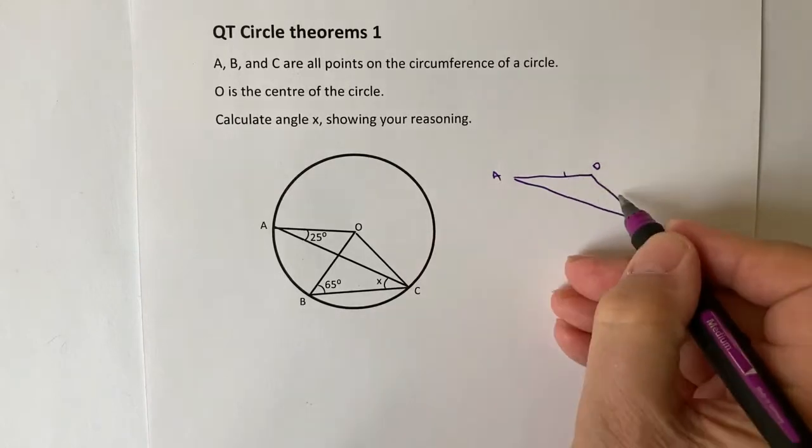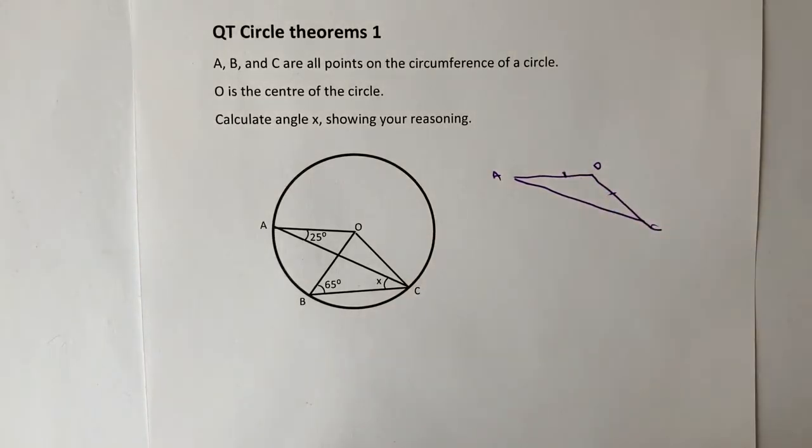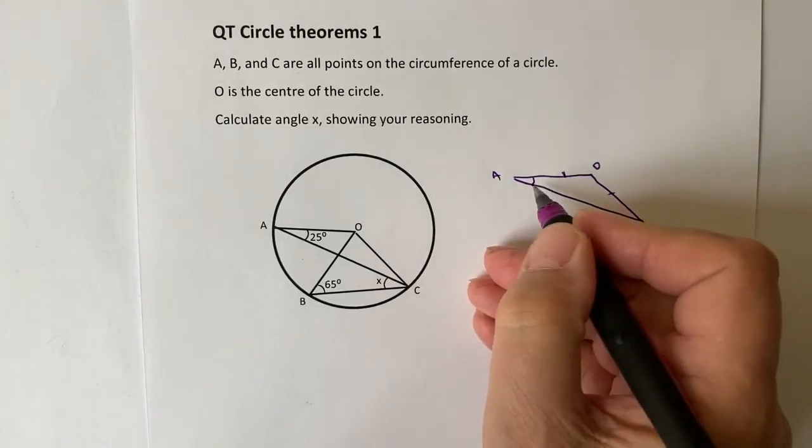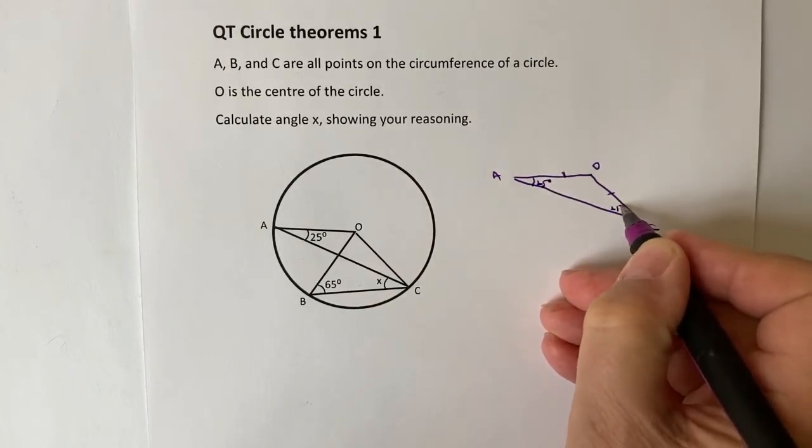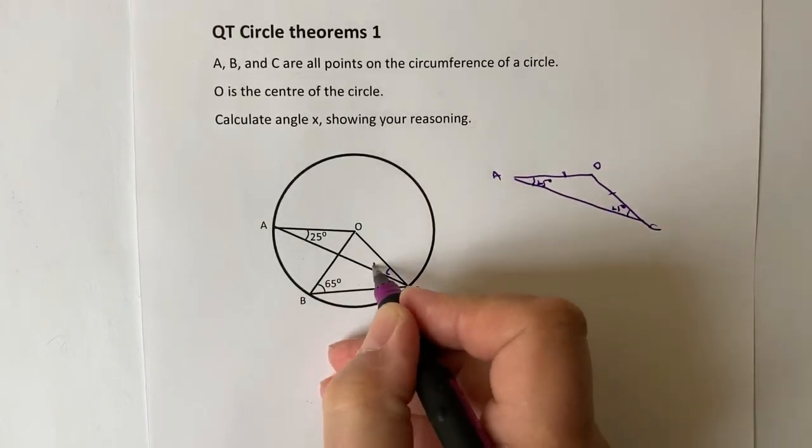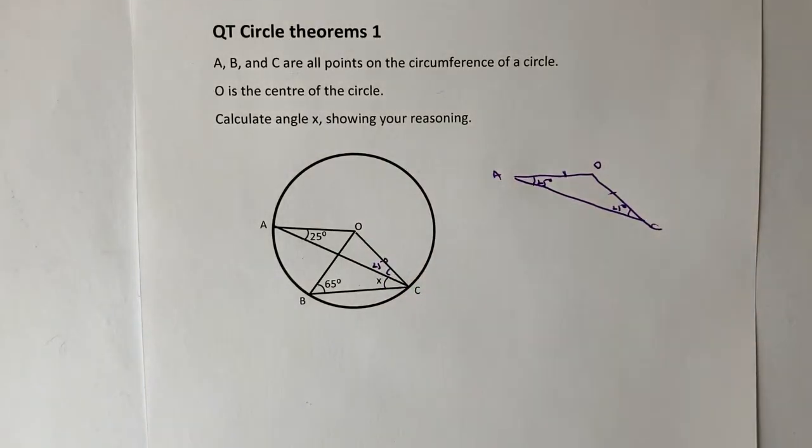Now, if it's isosceles, then it means not only are those sides the same, but also if this is 25 degrees, then this will also be 25 degrees. So in other words, this point here is 25 degrees.